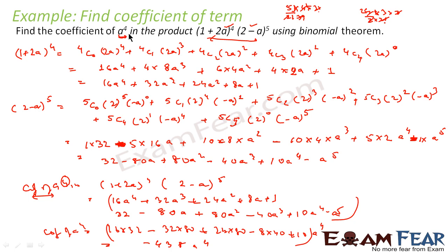So the coefficient of a⁴ is −438. What we have done: we expanded both expressions, then arranged one in ascending order and the other in descending order of powers of a, and clubbed only those terms whose product gives a⁴. This makes solving much faster than multiplying all terms.